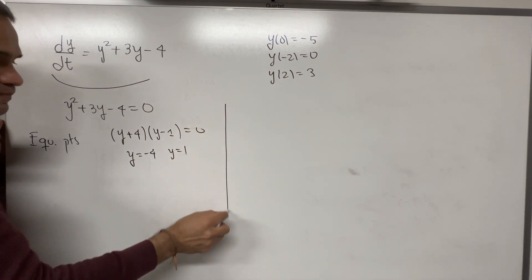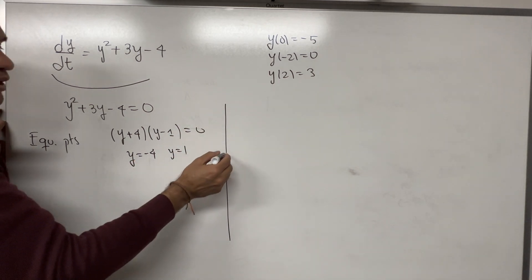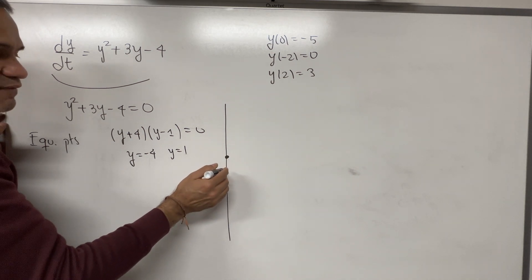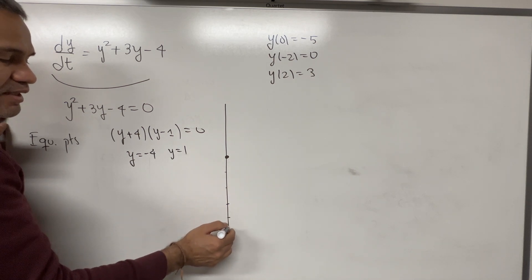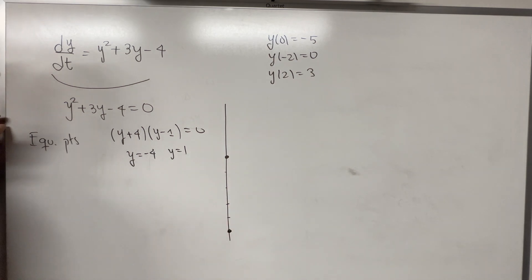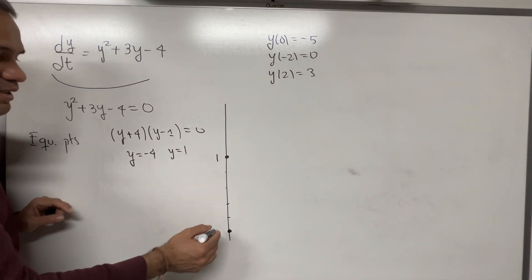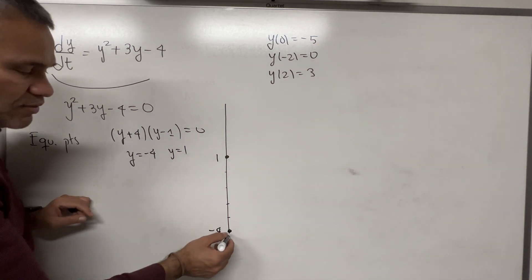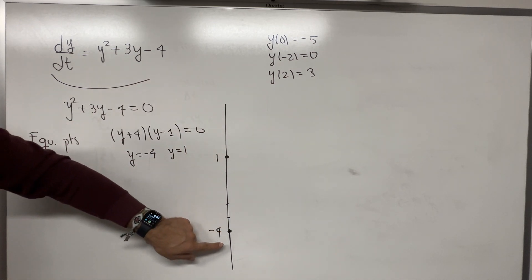To draw the phase line, we draw a vertical line and plot only the equilibrium points: we plot 1 and we plot -4. We don't plot zero — only the equilibrium points 1 and -4. With these two points, this line is divided into three pieces.